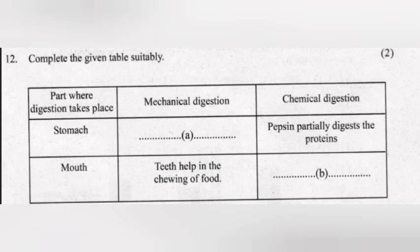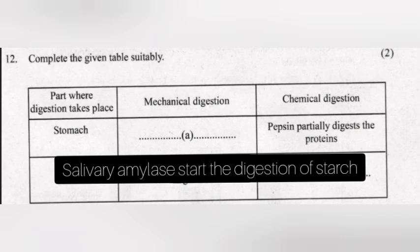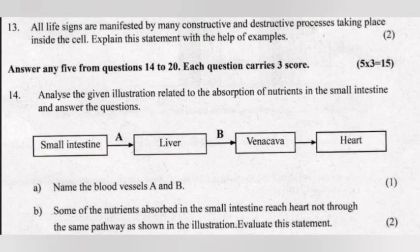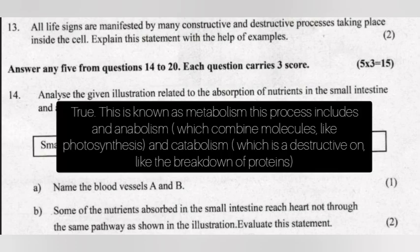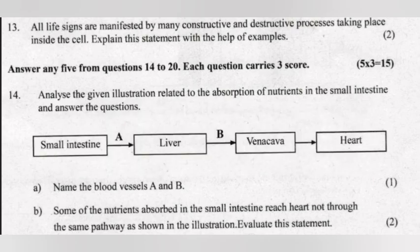Question 12: Complete the given table suitably. Answer: A — Peristalsis. B — Salivary amylase; starts the digestion of starch. Question 13: All life signs are manifested by constructive and destructive processes taking place inside the cell. Explain with examples. Answer: True. This is known as metabolism, which includes anabolism — combining molecules like photosynthesis — and catabolism — destructive processes like the breakdown of proteins.